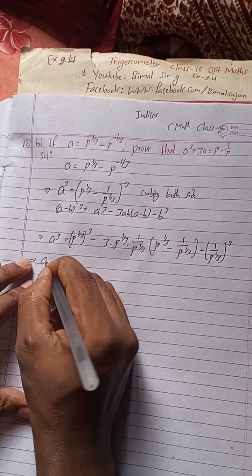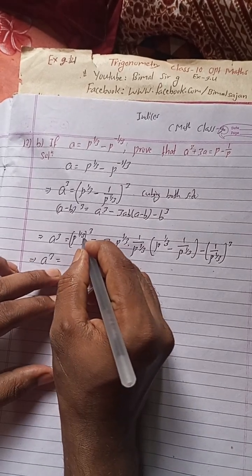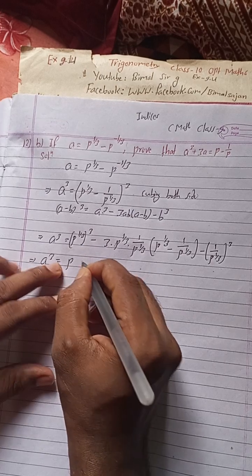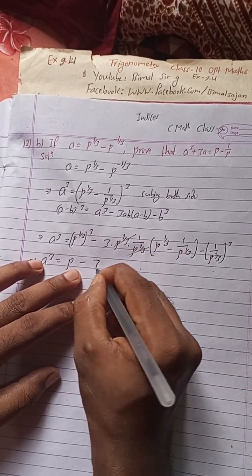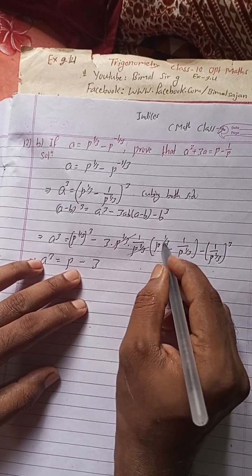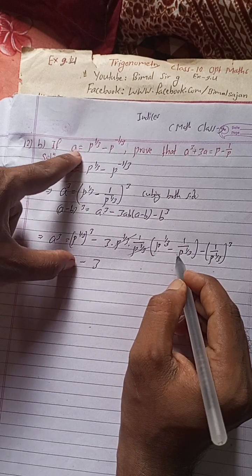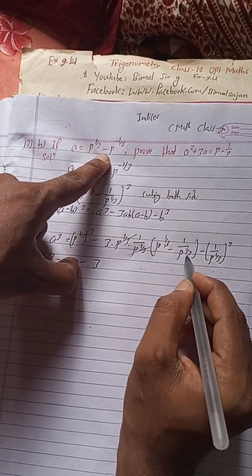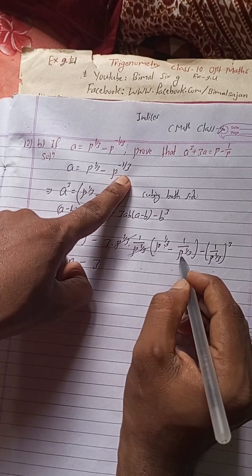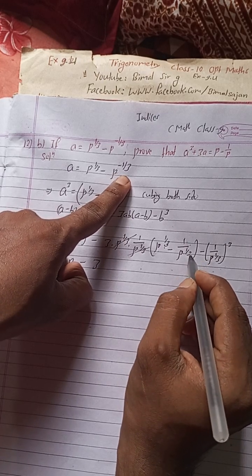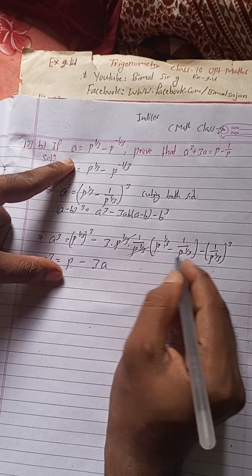Now, a cube as it is on the left side. On the right, the 3 terms simplify: the product p to the power 1/3 times 1 by p to the power 1/3 cancels to give 3, and the bracket p to the power 1/3 minus 1 by p to the power 1/3 is the same as the original expression for a, so we can substitute a there.